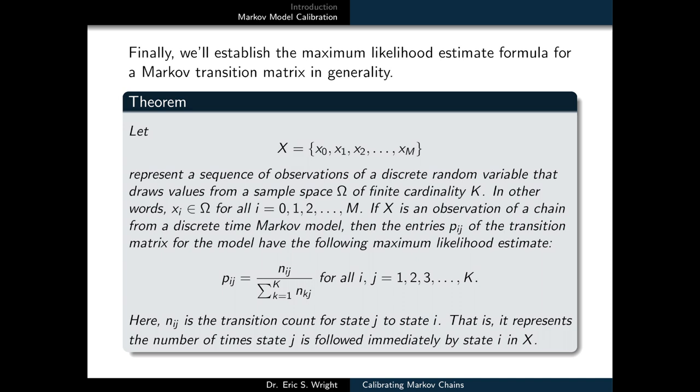Finally, we'll summarize our work today by establishing the maximum likelihood estimate formula for a Markov transition matrix in generality. That way we could apply our results to other similar modeling efforts that have nothing to do with the desert plant community example we've been tracking.